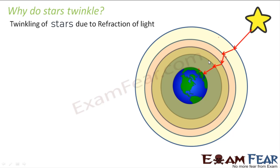Sometimes we see the star here, sometimes there — too many apparent positions. At one instant the star appears here, at the next instant here, then here again. This effect is seen as twinkling. Twinkling of stars is nothing but multiple refractions experienced by starlight as it crosses so many layers of atmosphere. Each refraction causes a lateral shift, so we never view the actual position of the star, only its apparent position.